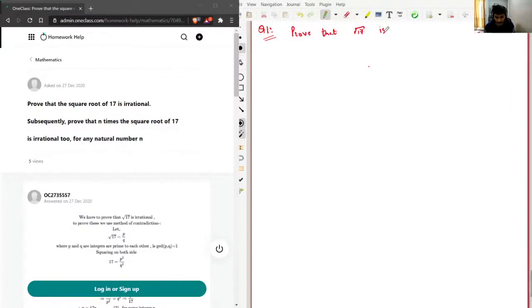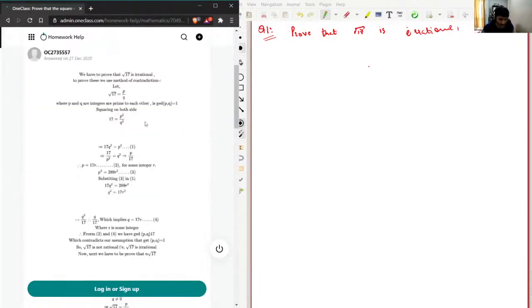Subsequently prove that n times the square root of 17 is irrational too. For this proof, I will go with the solution given here because this is a lengthy kind of proof and I'm not good at memorizing things. So let's say that square root of 17 is P over Q, where P and Q are integers.